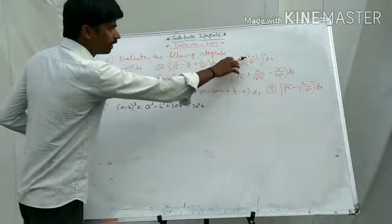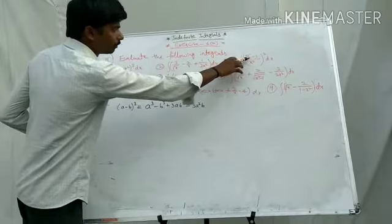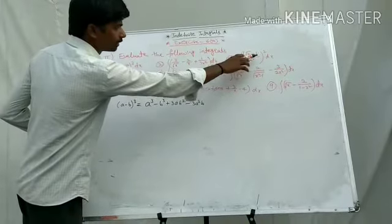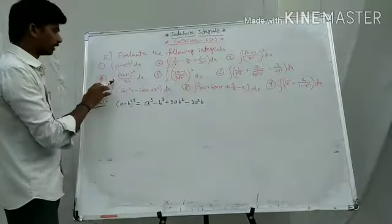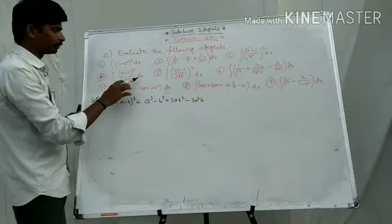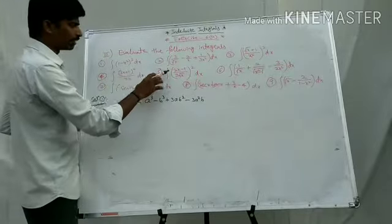Third one: integral of (root x plus 1 by x squared) whole square dx. Fourth one: integral of (3x plus 1) whole square by 2x dx.